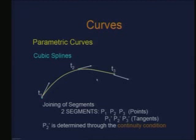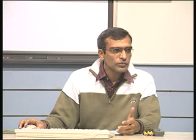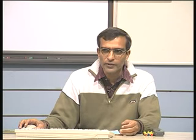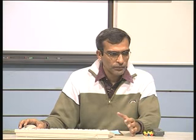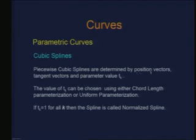This can be extended to any set of points. It sets up a system of equations, and we solve for all the intermediate tangent vectors. Looking at the input to cubic splines, the required inputs are position vectors, tangent vectors, and the parameter Tk which needs to be supplied.